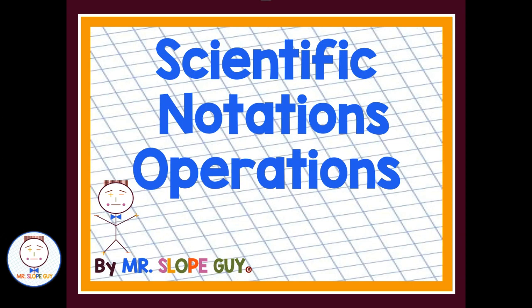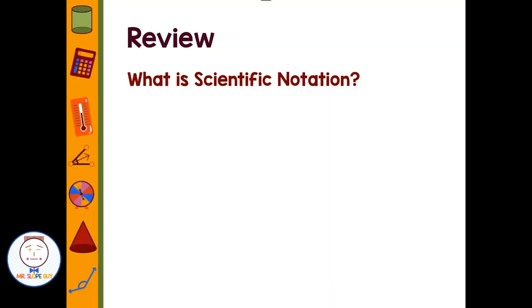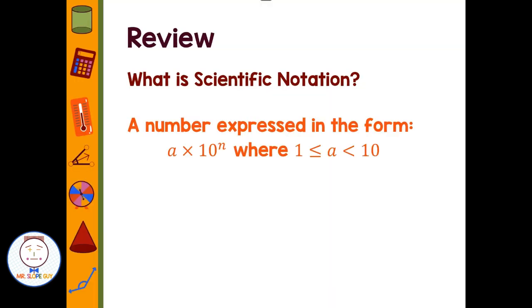Scientific notation operations — what is scientific notation? Scientific notation is a number expressed in the form a times 10 to the nth power, where 1 is less than or equal to a, which is less than 10. So our a value has to be a number between one and ten, including one but less than ten.